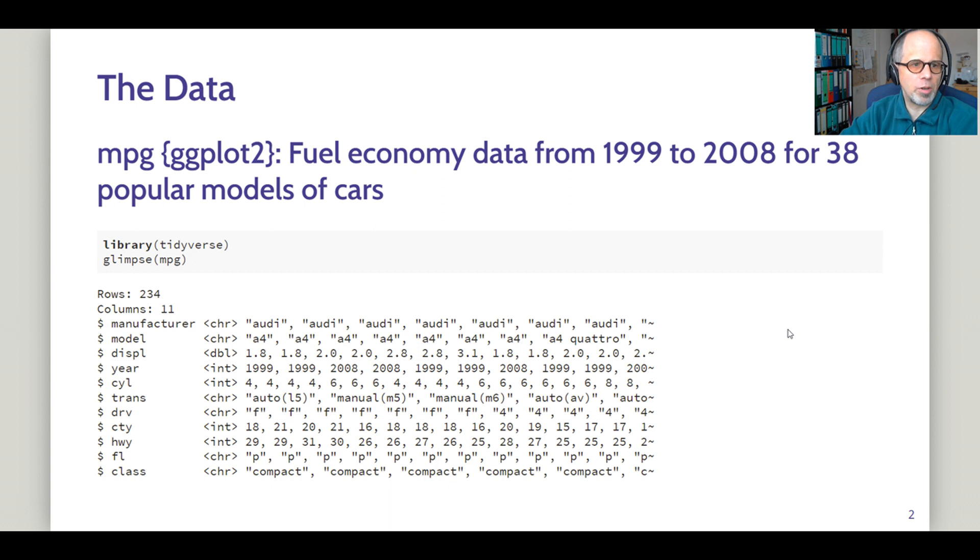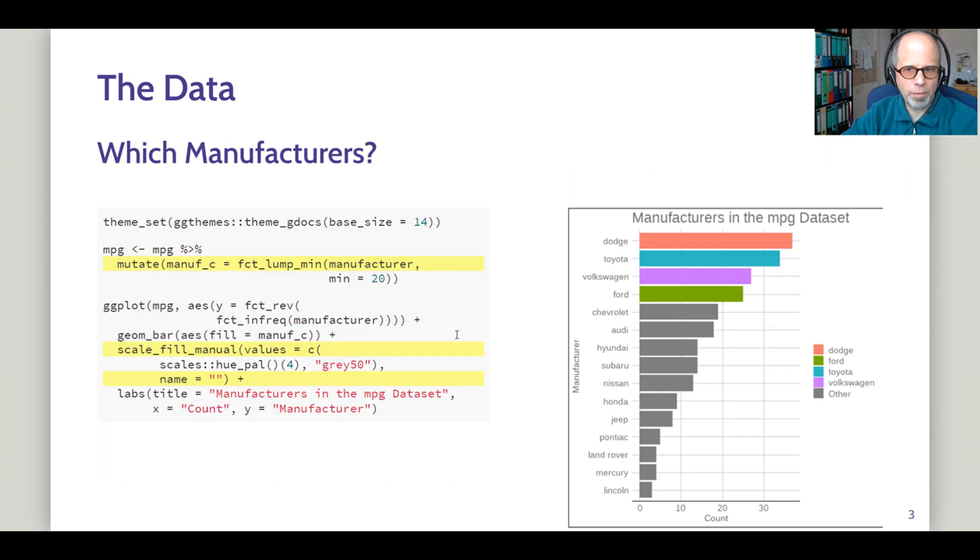The data we're using today comes from the ggplot2 package, so you can follow along without downloading it from anywhere. It's the mpg dataset and it contains fuel economy data for 38 popular models of cars. This is a quick glimpse of the data. On the next slide I'll show you the manufacturers that we find in the data.